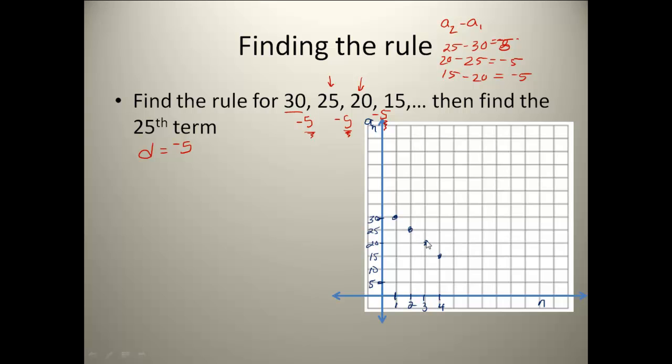Now if I look at a scatter plot of these points, you can see that this is linear. Anytime we have an arithmetic sequence, we're actually going to get a straight line, which means our rule for this sequence is going to be in the form y equals mx plus b.